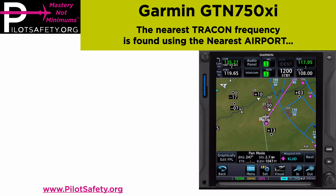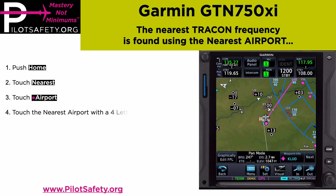What we're going to do is, from the map page, push the home button, then touch Nearest, then touch Nearest Airport. I want to touch the nearest airport with a four-letter identifier — in this case, Decatur, Texas: Kilo, Lima, Uniform, Delta.